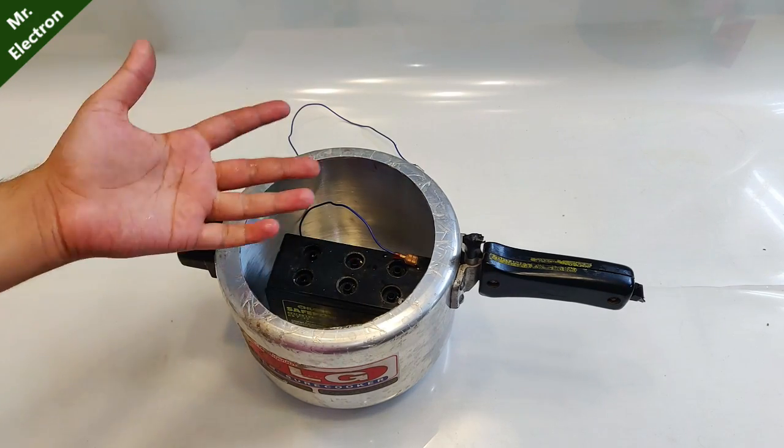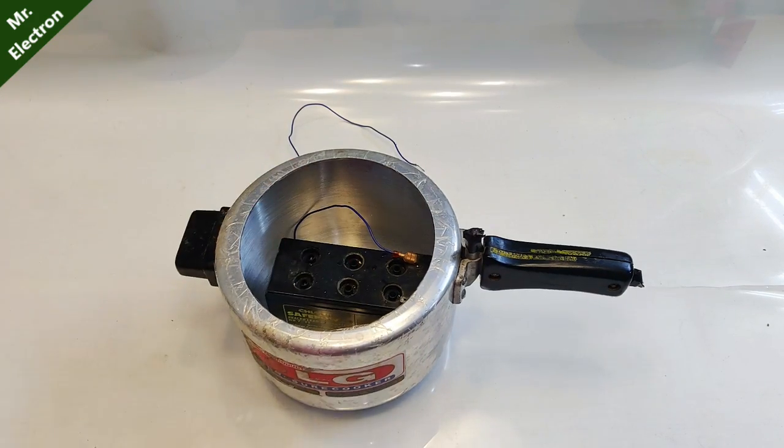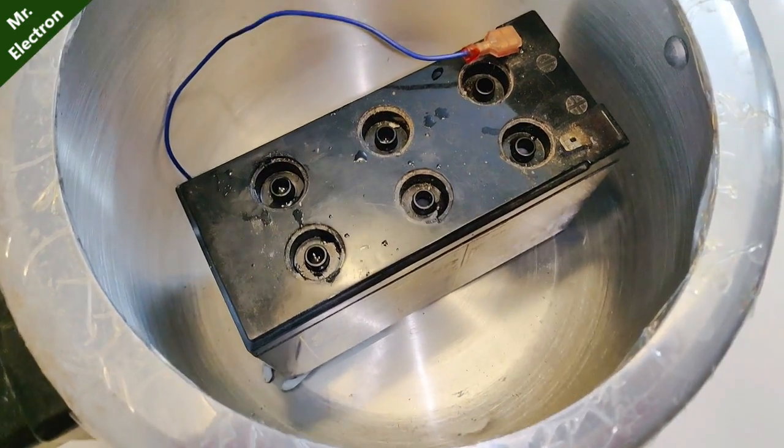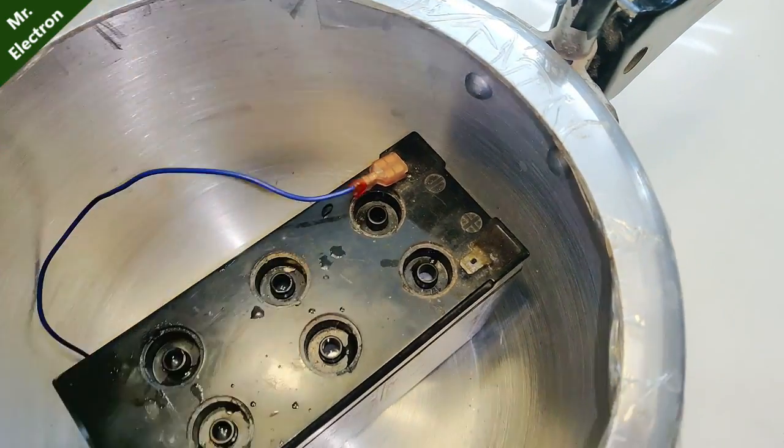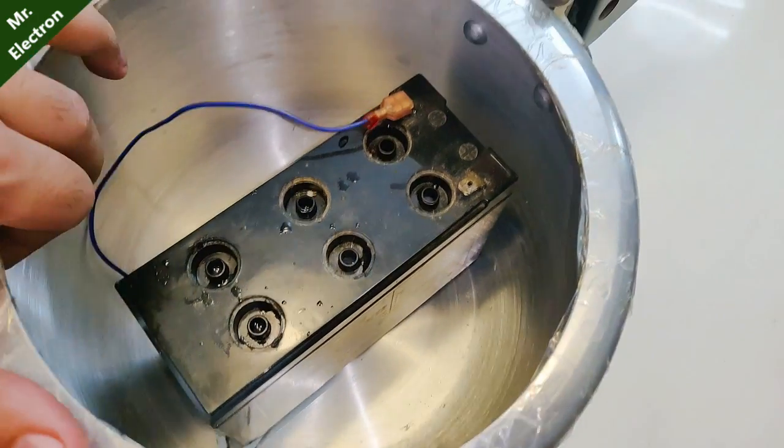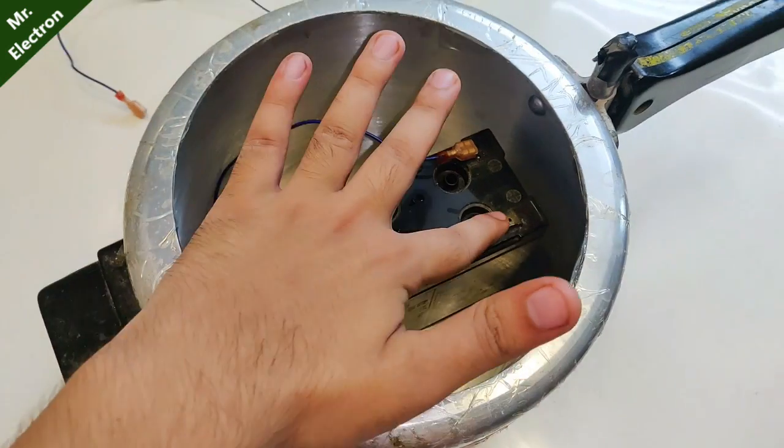Battery is in place. I've placed this metal sheet this way because I need the negative of the battery to get in contact electrically with this part of the cooker. This side is still open. Let's do the connection for this one.